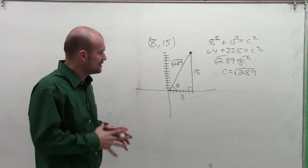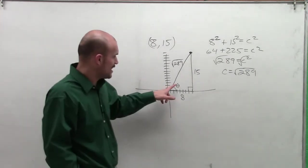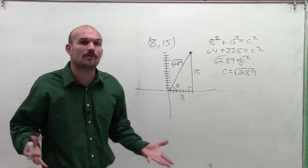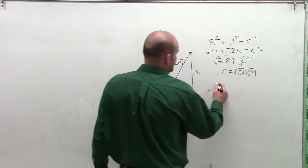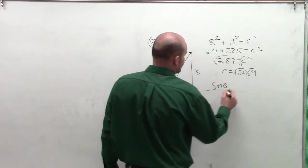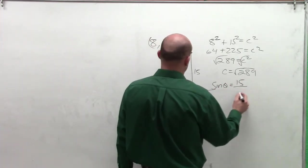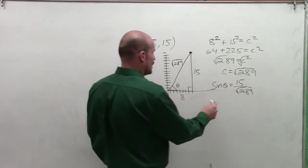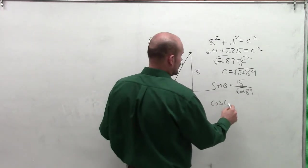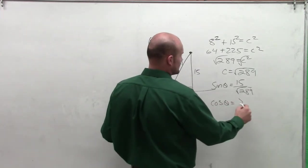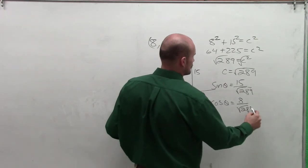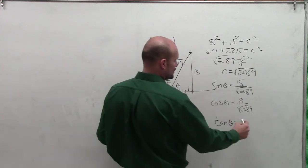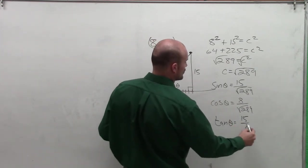Now moving forward, we need to evaluate our trigonometric functions. We have our angle theta, our right angle, and our hypotenuse. The sine of our angle theta is the opposite over the hypotenuse, which is 15 over the square root of 289. The cosine of theta is the adjacent over the hypotenuse, which is 8 over the square root of 289. The tangent of theta is the opposite over the adjacent, which is 15 over 8.